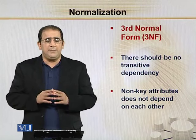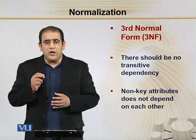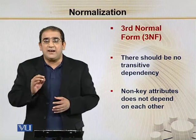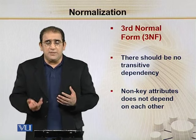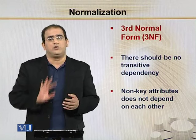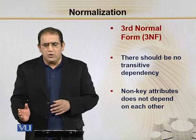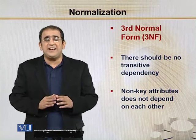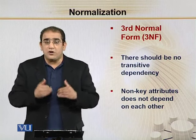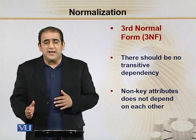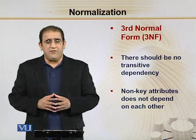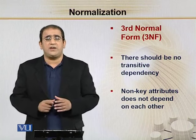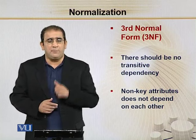What is transitive dependency in simple terms? Transitive dependency means that no non-key attribute should be able to find or determine the value of another non-key attribute correctly or uniquely. There should be no dependency among non-key attributes. It should not be the case that one non-key attribute is fully functionally dependent on another non-key attribute. If this exists, it means transitive dependency exists and you have to remove it. If a non-key attribute is fully functionally dependent on another non-key attribute, that means your relationship has a transitive dependency — you have to remove it.